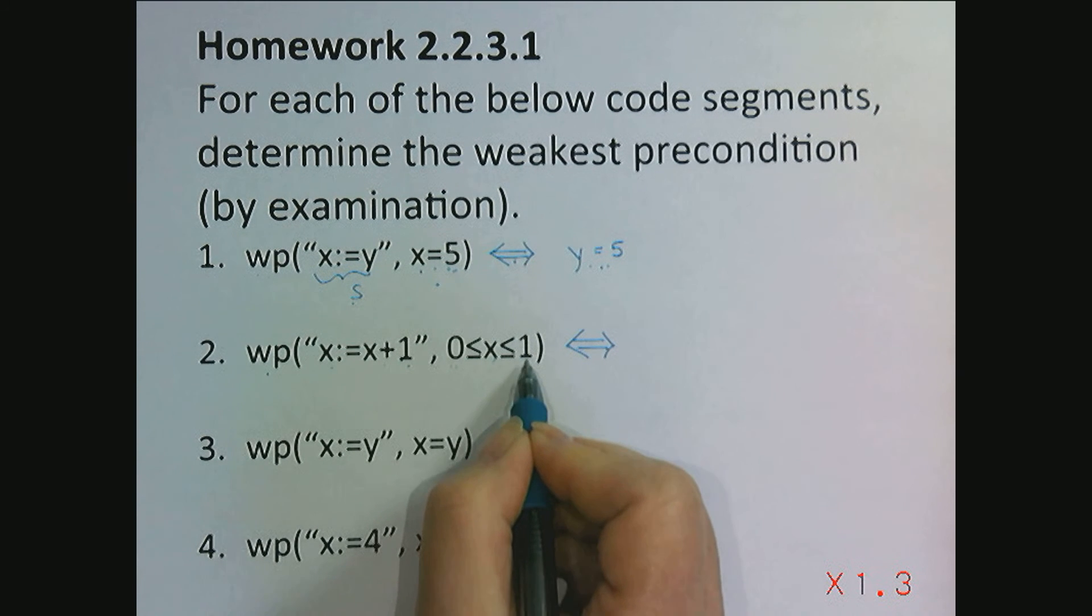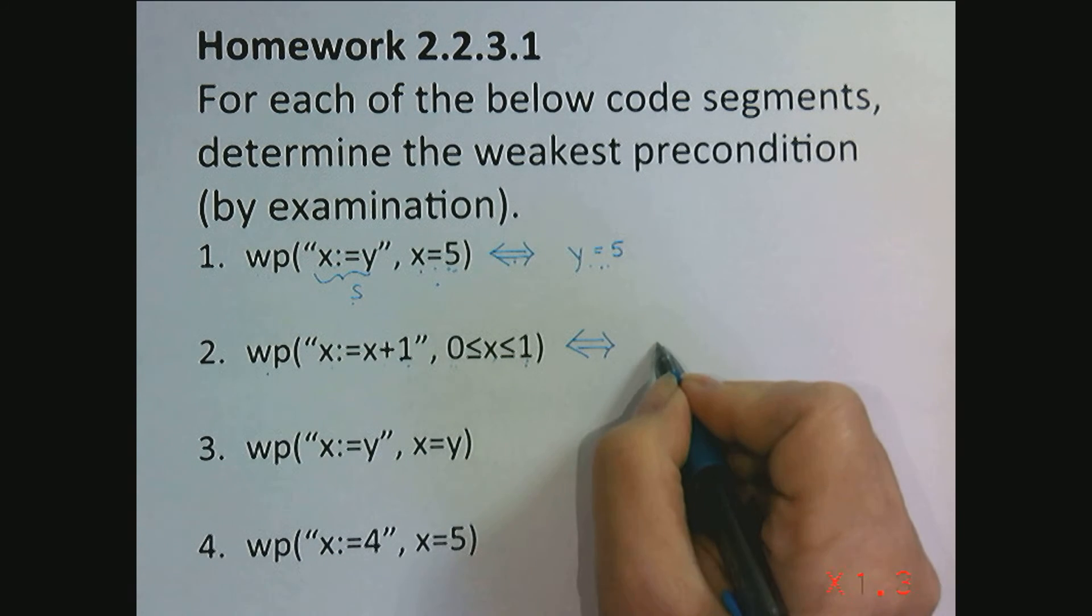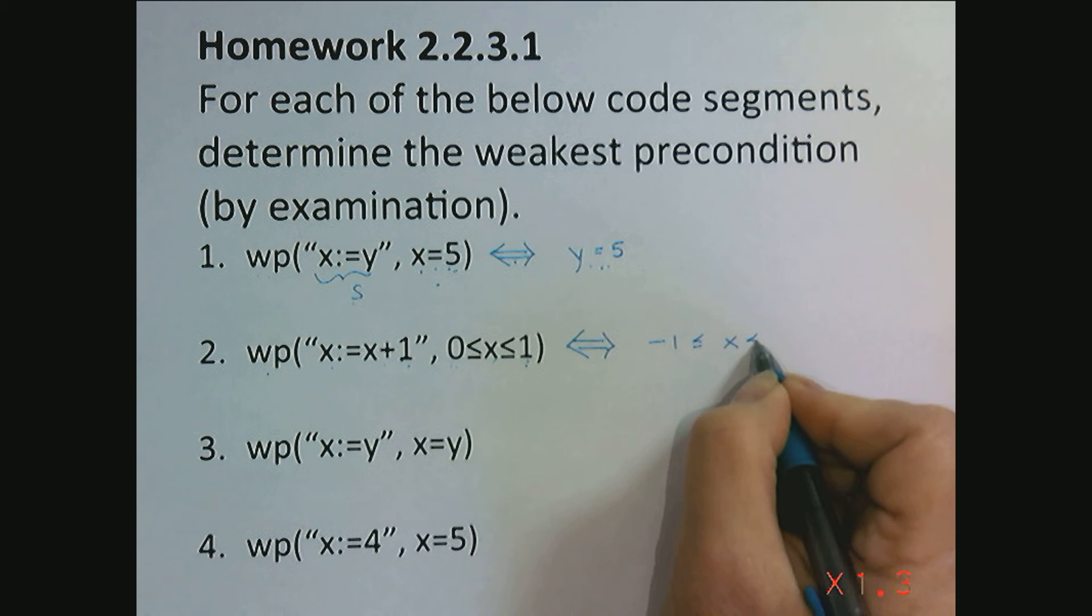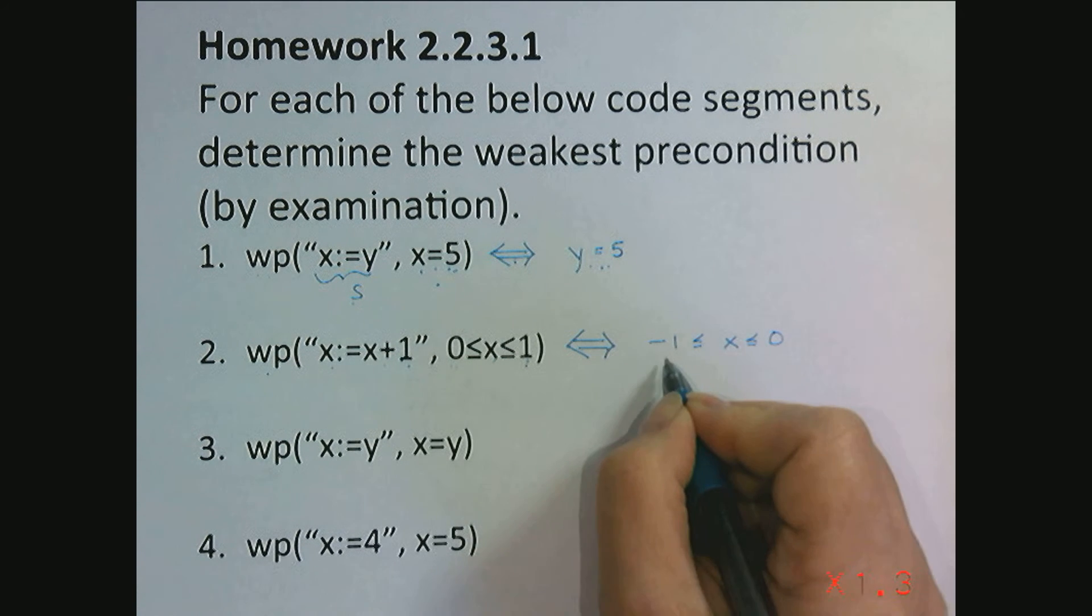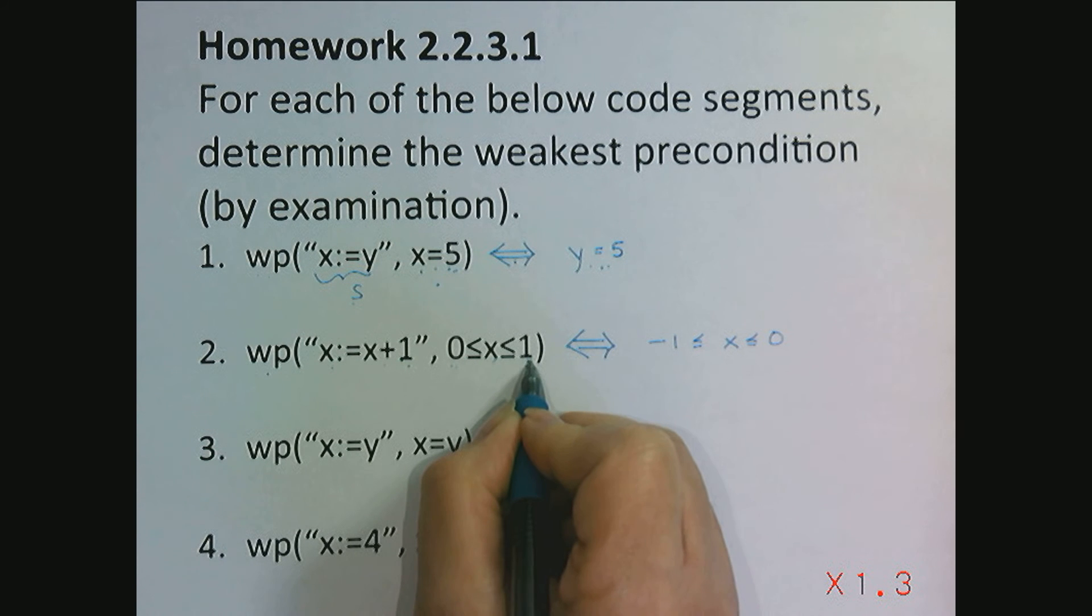I had to start in a state where x was 1 less than it. So x would have had to be between negative 1 and 0, so that when I add 1 to it, I get a value between 0 and 1. Make sense?